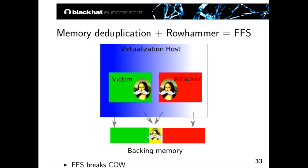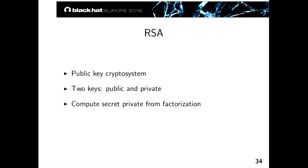That's how you have this reliable one-bit write primitive using Rowhammer and memory deduplication. As you can see, Flip Feng Shui breaks copy-on-write — the very feature needed to make memory deduplication semantically sound, not to mention secure. Those two techniques come together.